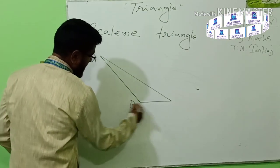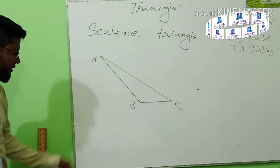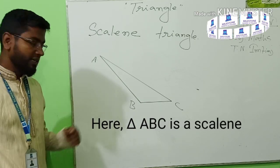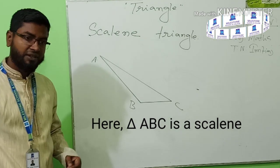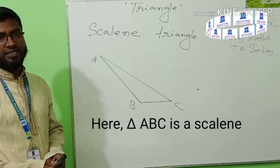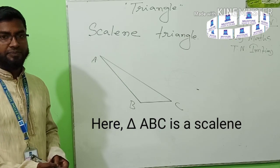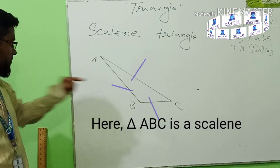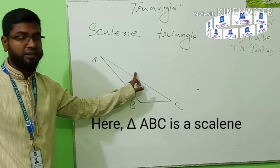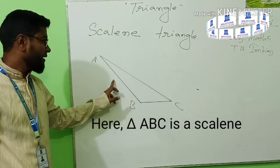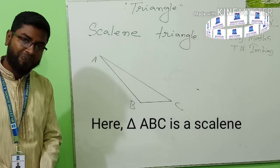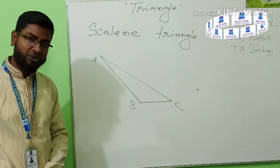We can give its name A, B, C. Triangle ABC is a scalene triangle. The three sides have different lengths — this one is small, this one is bigger, and this one is even bigger. That means the three line segments are all different lengths. That is called a scalene triangle. Have you understood how to draw it? Please draw it.